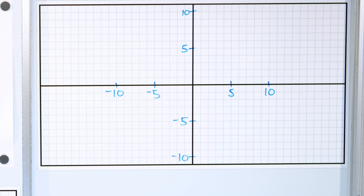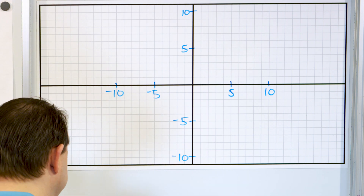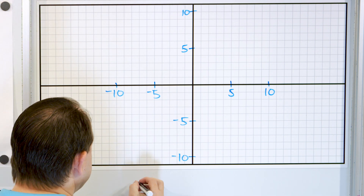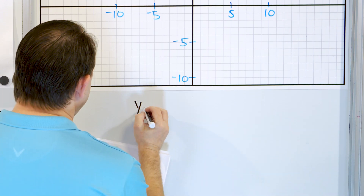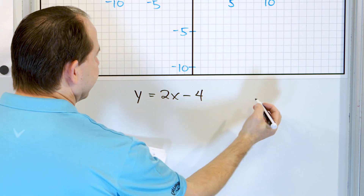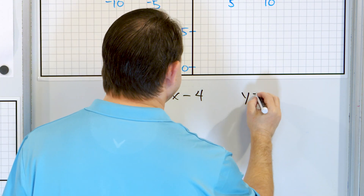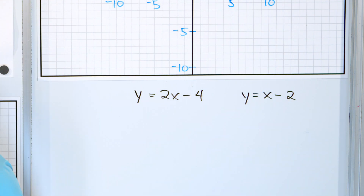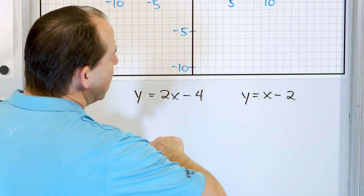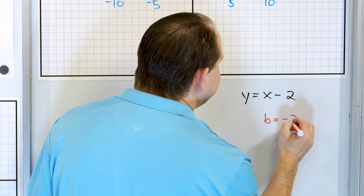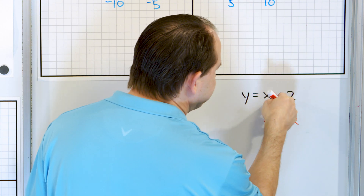For the follow-on problems, we're not going to do an input-output table anymore, because even though it's very nice, it is not the fastest way to graph equations. Let's take a look at problem number two: y is equal to 2x minus 4, and y is equal to x minus 2. You can graph them in any order. What is the y-intercept of y equals x minus 2? The y-intercept is negative 2, because you can think of it as x plus a negative 2.